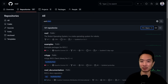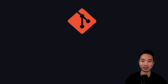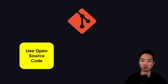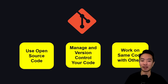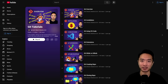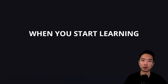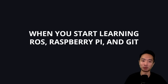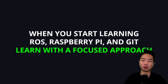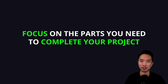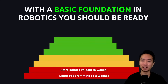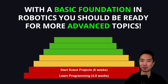When you dive into robotic projects, you'll often be using code from GitHub, so it's really good to start learning Git. Git lets you use open source code, manage and version control your code, and work on the same code with other people. When learning things like ROS, Raspberry Pi, and Git, I want you to use a focused approach — just focus on the parts you need to complete your project. With a basic foundation in robotics, you should be ready for more advanced topics.